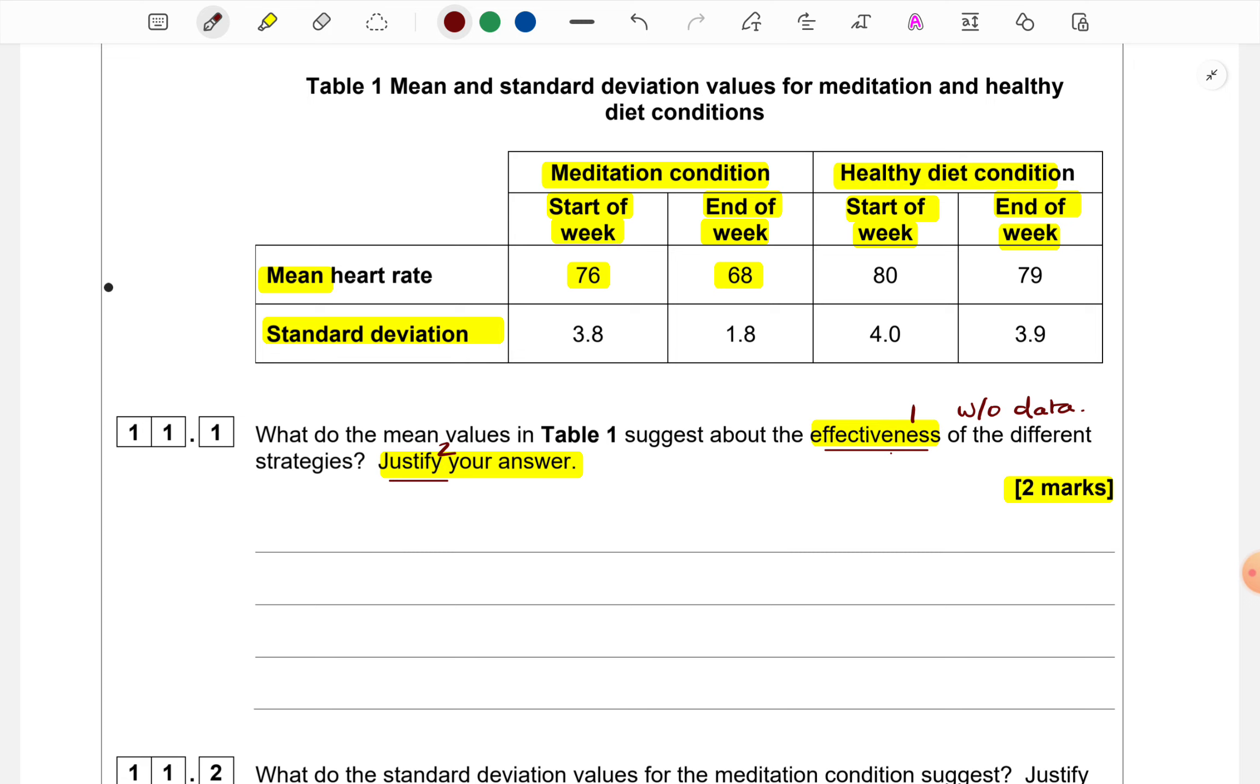Whenever we have to infer anything from the table, that can be without numbers, without data. It should be an interpretation. We have to think how would the researcher interpret these findings, how would he explain them in words. From that point of view, we will talk about the effectiveness. But when we have to justify, then we have to give numbers because we are answering on the basis of what has he made the inference. So he has made the inference on the basis of the data or the numbers. So first point will be an inference or a conclusion and the second part will highlight those results which have led to that conclusion.